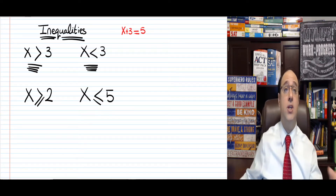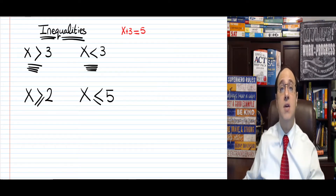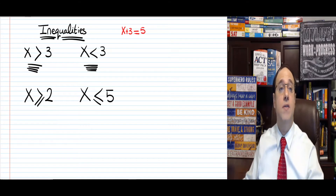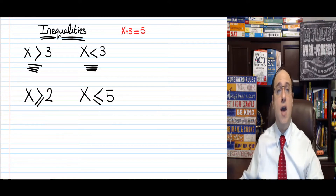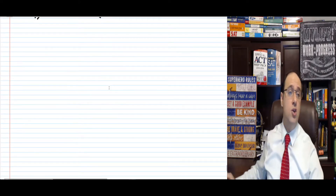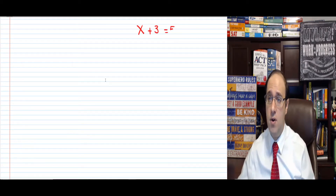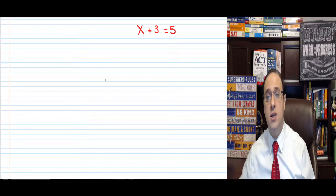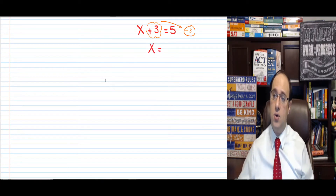We're going to solve inequalities using the exact same methods we learned for solving equations — there's only one little difference, otherwise everything is pretty much the same. Here's an example we know how to do: x plus 3 equals 5. We say let's get rid of the plus 3, move it to the other side as minus 3, so x equals 5 minus 3, which gives us x equals 2.